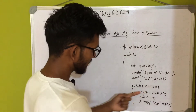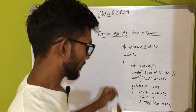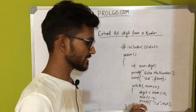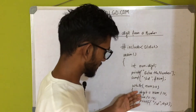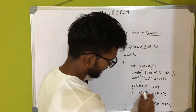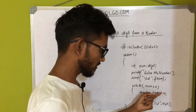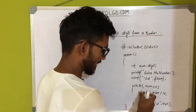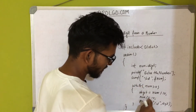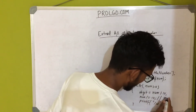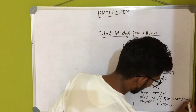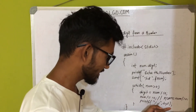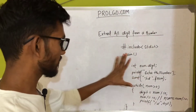Using scanf, I scan the entered number into the 'num' variable. Now I use a while loop with the condition: num is greater than zero. Whenever the number is greater than zero, the loop continues. Inside the while block, we compute digit = num % 10 to extract the last digit, then we divide num by 10 using the compound operator num /= 10.